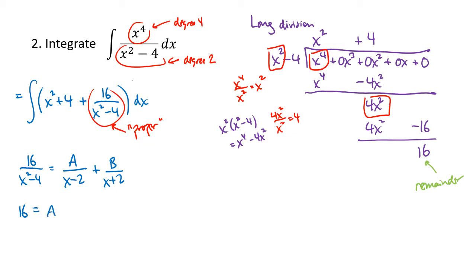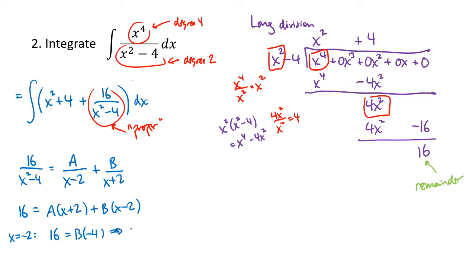We rewrite 16 over x squared minus 4 as a over x minus 2 plus b over x plus 2, just like the previous problem. Multiply both sides to get a times x plus 2 plus b times x minus 2. Plugging in x equals negative 2: 16 equals b times negative 4, so b equals negative 4. Plugging in x equals 2: 16 equals a times 4, so a equals positive 4.